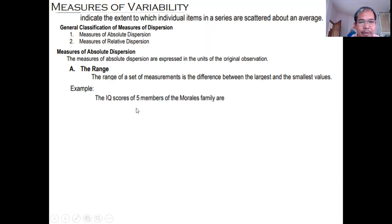Let's have an example. Ang IQ scores ng five members of Morales family are 108, 112, 127, 116, and 112. Ang highest value is 127. Lowest value is 108. Or 127 minus 108 plus 17. That's the range.